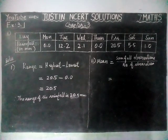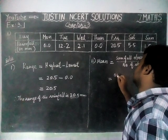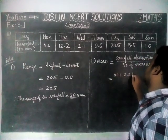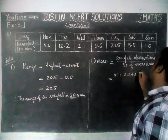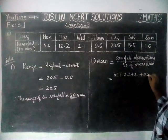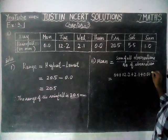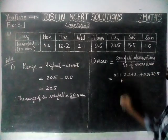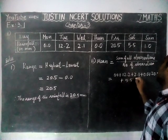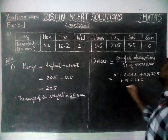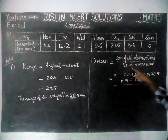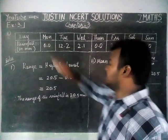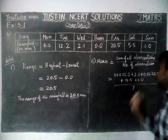Sum of all observations — we are going to add all the values: 0.0 plus 12.2 plus 2.1 plus 0.0 plus 20.5 plus 5.5 plus 1.0, divided by the number of observations. Total is 7 days, so we are dividing by 7.